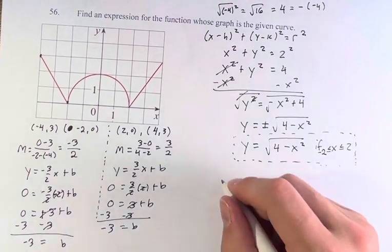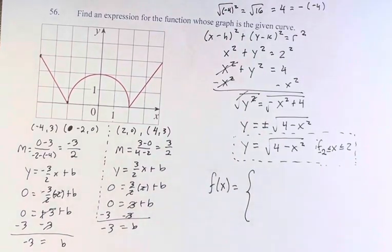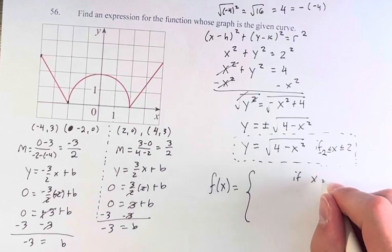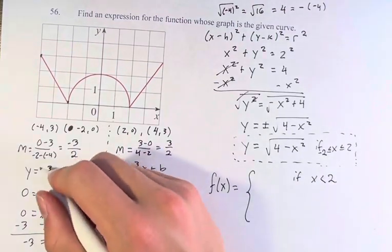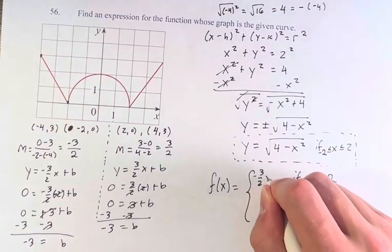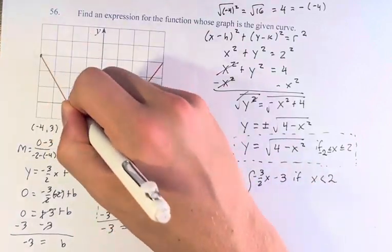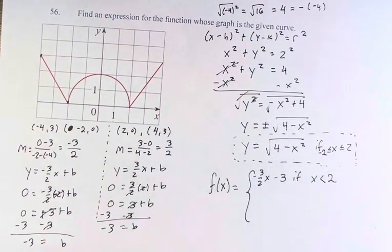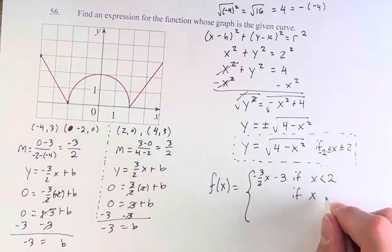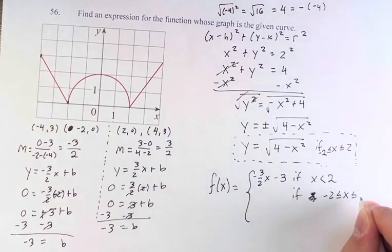So we have the function f(x). Let's call it that. It's equal to, when x is less than -2, it's equal to -3/2 x + b, which is just minus 3. That's the equation of this line. In the middle, if x is, I should write this separately, -2 ≤ x ≤ 2.